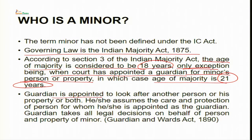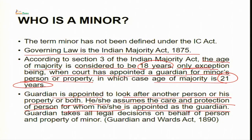A guardian is appointed to look after another person or his property or both. The guardian assumes the care and protection of the person for whom he or she is appointed. The relevant law which tells about the appointment of a guardian by the court — who is a guardian and what purpose the guardian serves — is the Guardians and Wards Act of 1890.